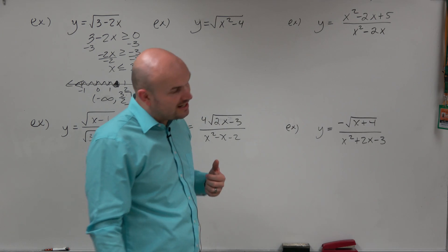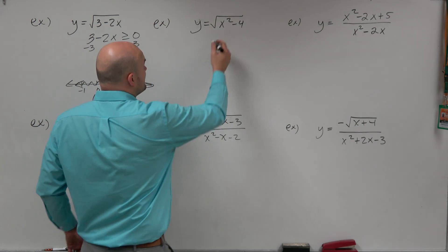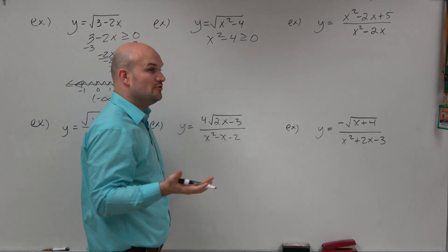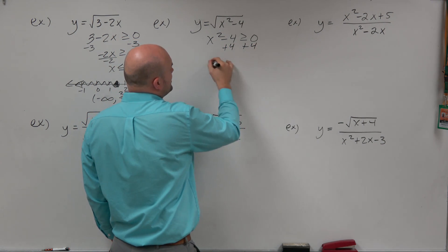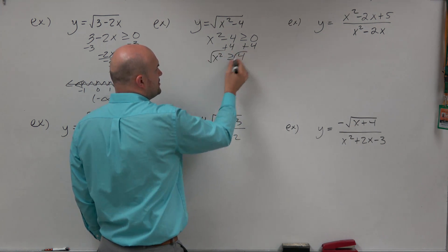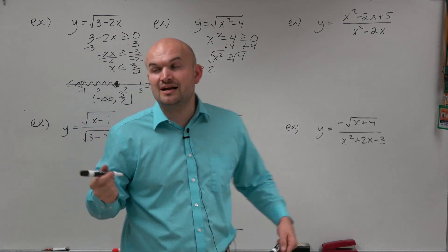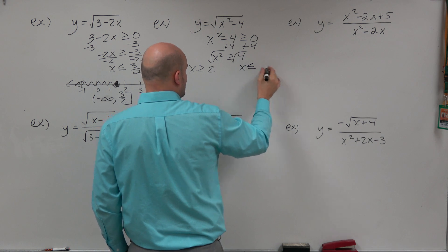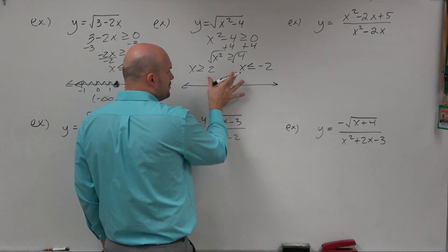In the next example, we have the square root of x squared minus 4. Again, it's under a radical, so it has to be greater than or equal to 0 for the values of x to be in the domain. I set up x squared minus 4 ≥ 0. This one is a little different because it's a quadratic, so we introduce the square root. When we do that, we include both the positive and negative solutions. So x has to be greater than or equal to 2, and when we introduce the negative value — remembering to flip the sign — x is less than or equal to negative 2.